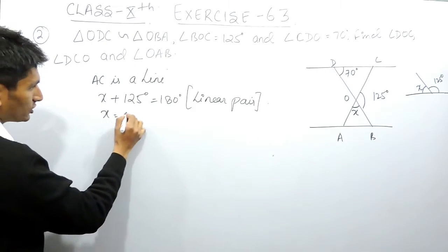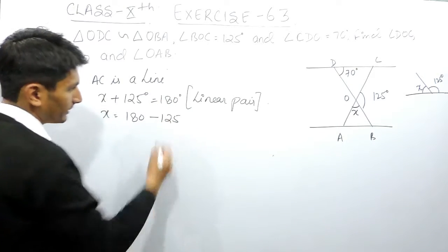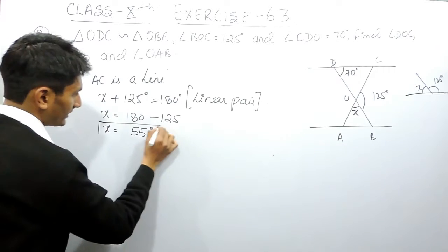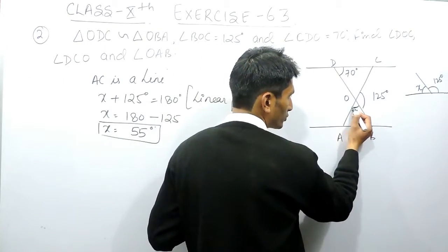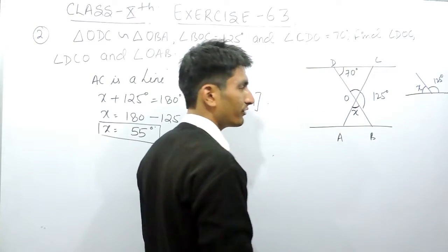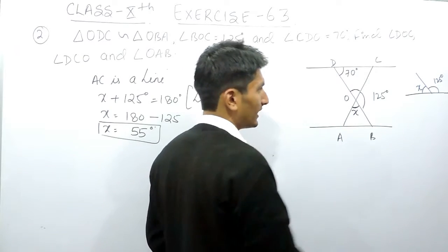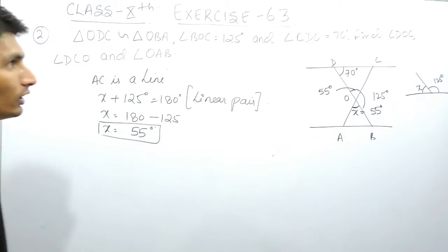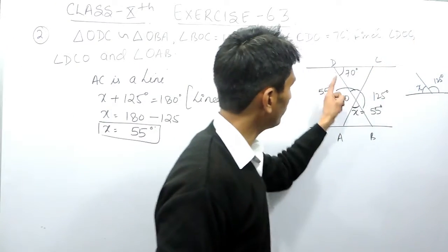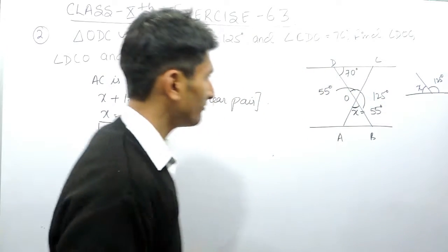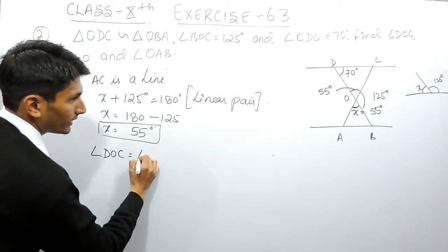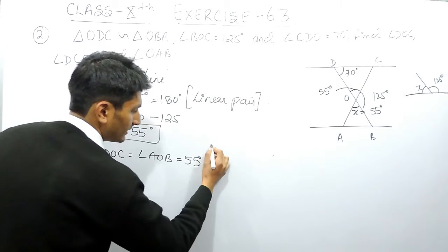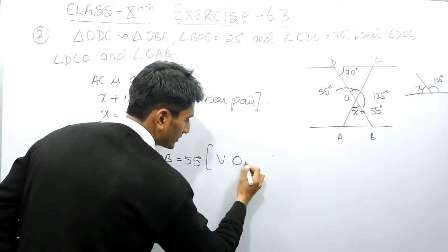So x equals 180 minus 125, which gives x equals 55 degrees. This means angle DOC must also be equal to 55 degrees, because these are vertically opposite angles.